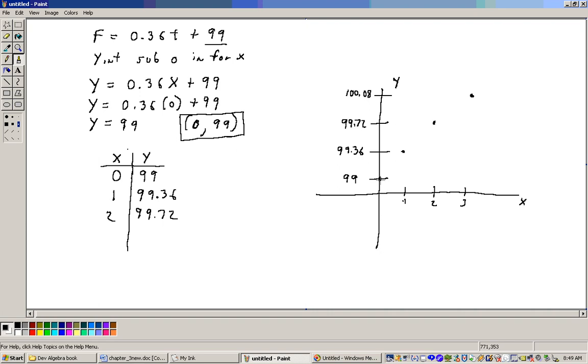Now, you could plot points to get the other ones, and I'll do that a second here until we see what the slope is. But if I put in 1 for X, well, if I substitute 1 in for X, 1 times this 0.36 is 0.36. 0.36 plus 99 is 99.36.